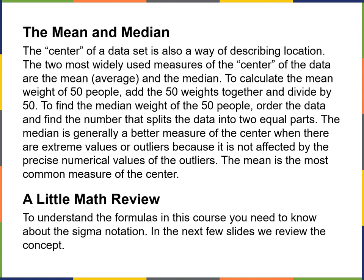The mean is the average — you take 50 people, add all their weights together and divide by 50, and that gives you the average weight. For the median, half the people weigh at that median point or less, and half are at that point or higher. The most common measure of the center is the mean, or the average.